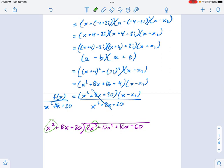That's going to give you 2x. 2x times x squared is going to make 2x cubed. 2x times 8x is going to be 16x squared. And 2x times 20 is going to be 40x. And now we put this whole thing in parentheses and subtract.